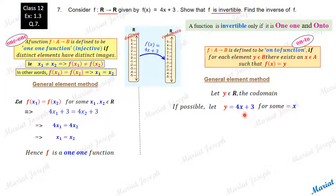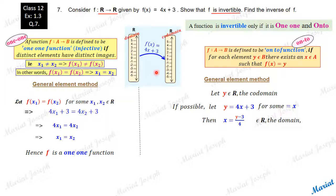From there, let me solve for x: x = (y − 3) / 4. For any y taken in the codomain, I am able to get an x. But the question is, will this x belong to the domain? Since y is any real number, y − 3 is a real number, and a real number divided by 4 is a real number. So the x calculated will surely be available in the domain — the set of real numbers.